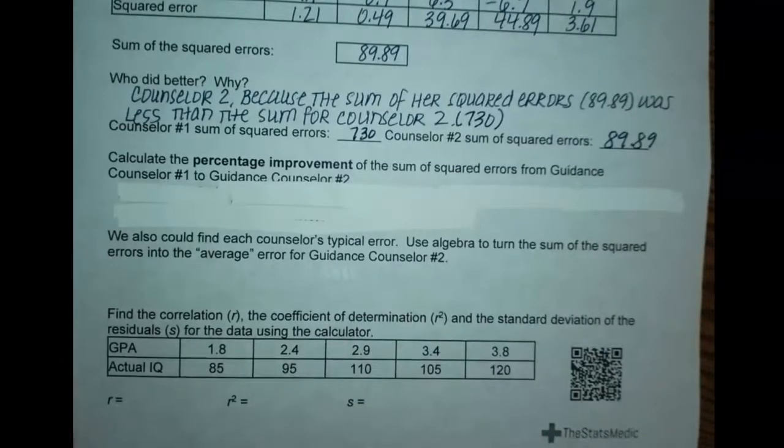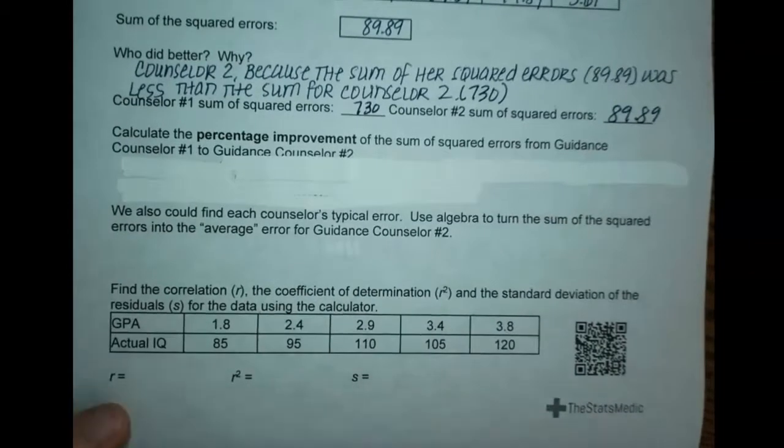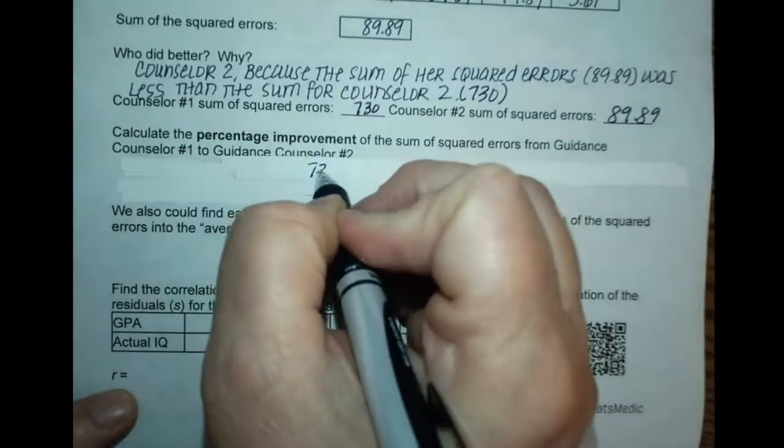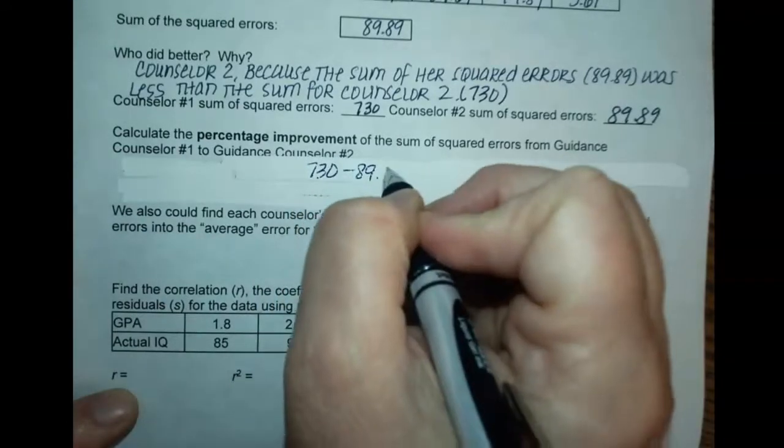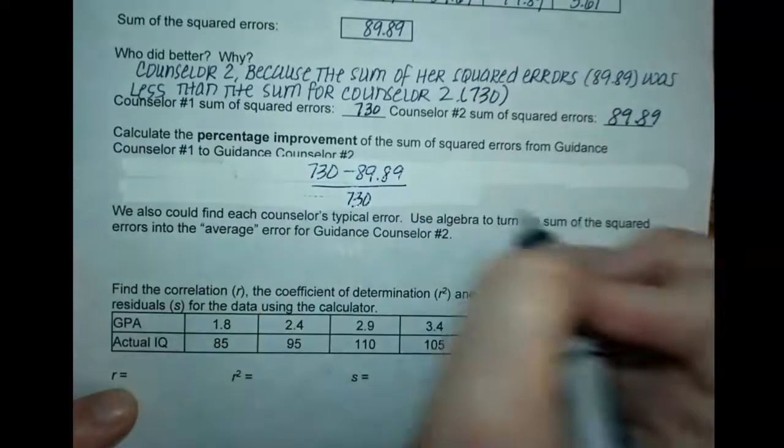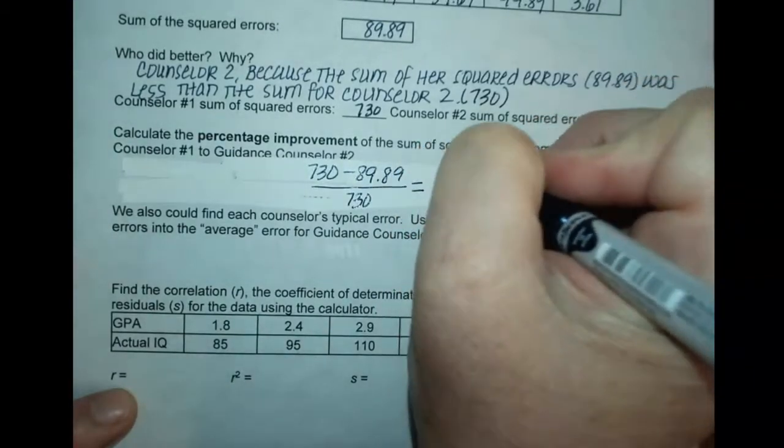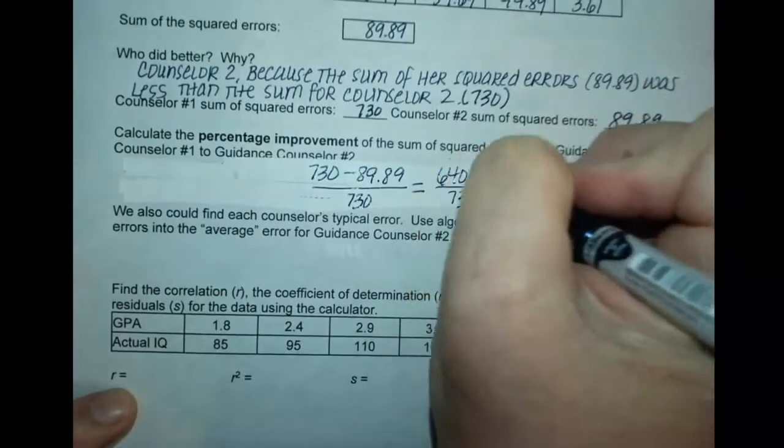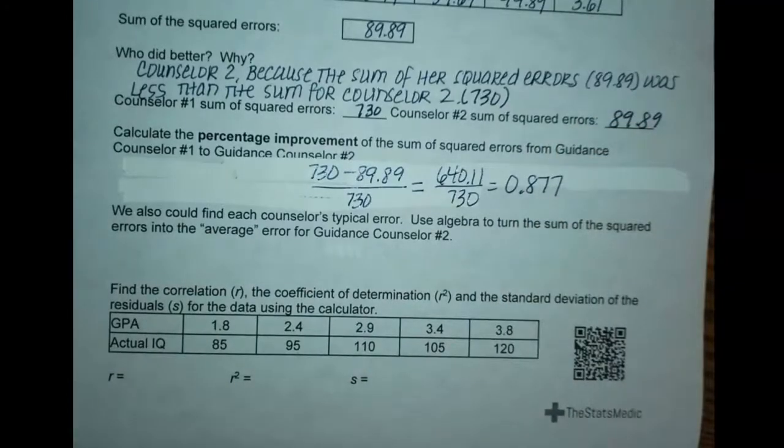Who did better and why? Counselor two did better because the sum of her squared errors, 89.89, was less than counselor one's sum of 730. We're going to calculate the percentage improvement from guidance counselor one to guidance counselor two. We subtract them and divide by 730. We get 640 divided by 730, which equals 0.877. That's the percentage improvement between counselor one and counselor two, almost 88%.